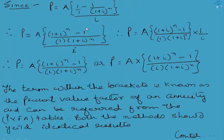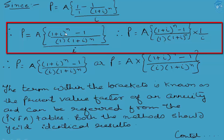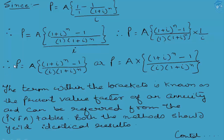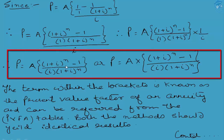By solving this — taking the LCM as (1 + i)^n — P equals [(1 + i)^n - 1] / [(1 + i)^n] multiplied by 1/i. The correct way to show it is multiplied by 1/i. Therefore finally we have P = A × [(1 + i)^n - 1] × (1/i) × 1/(1 + i)^n, or P = A × [(1 + i)^n - 1] / [i × (1 + i)^n]. This entire formula is the direct formula for calculating the present value of the future annuities.